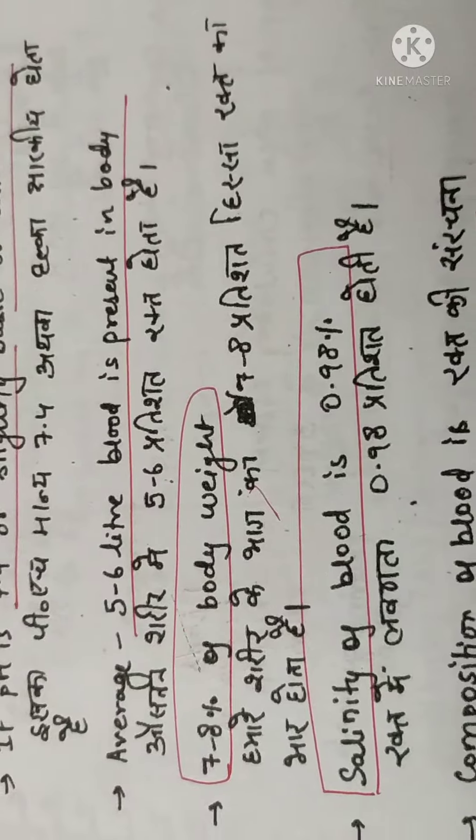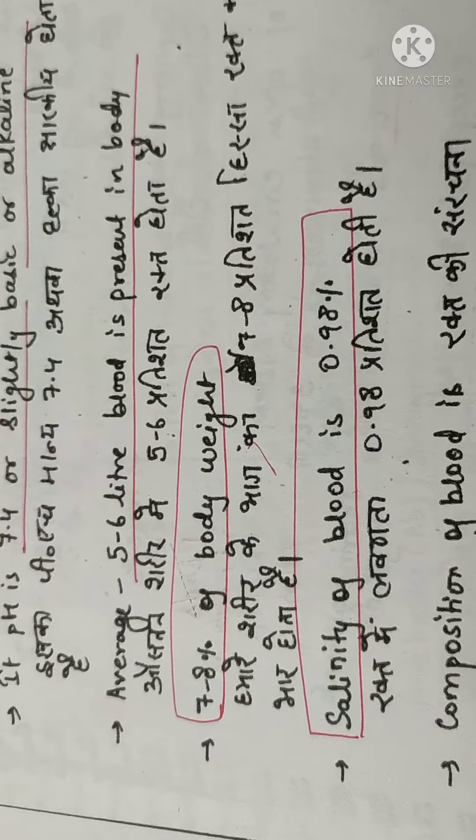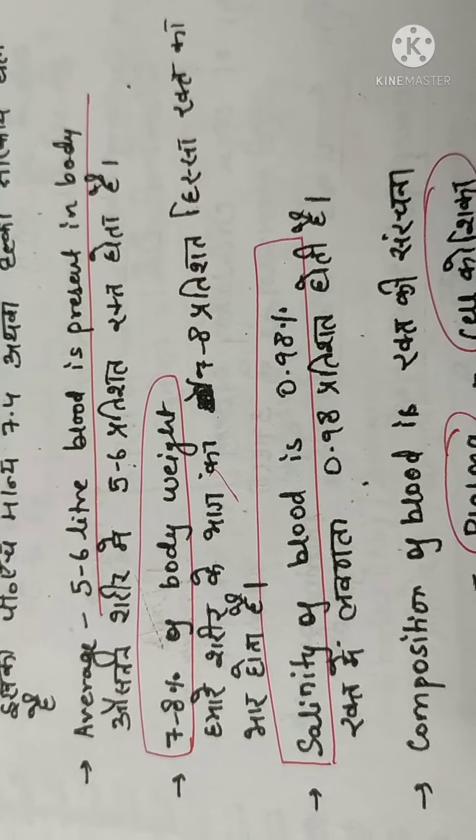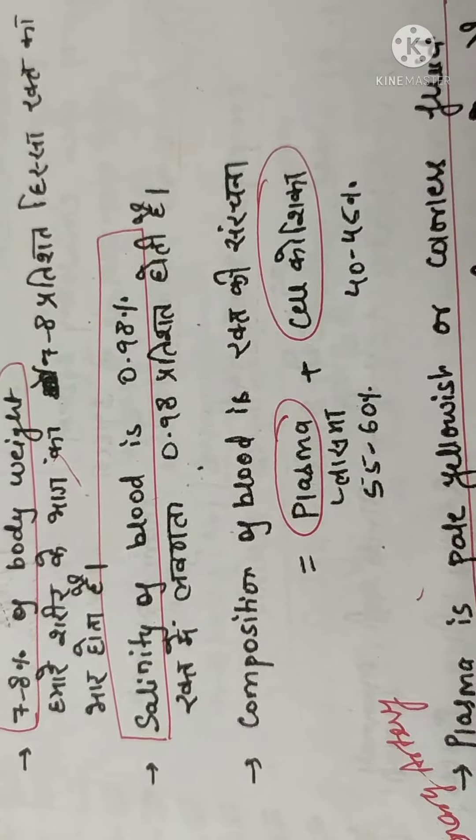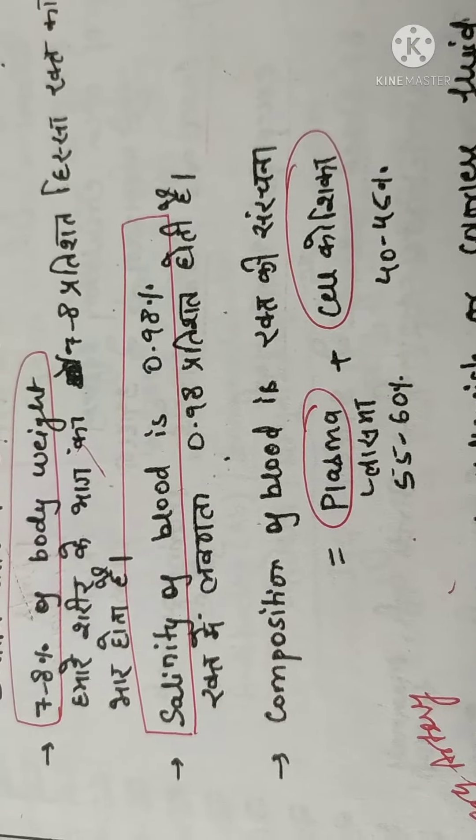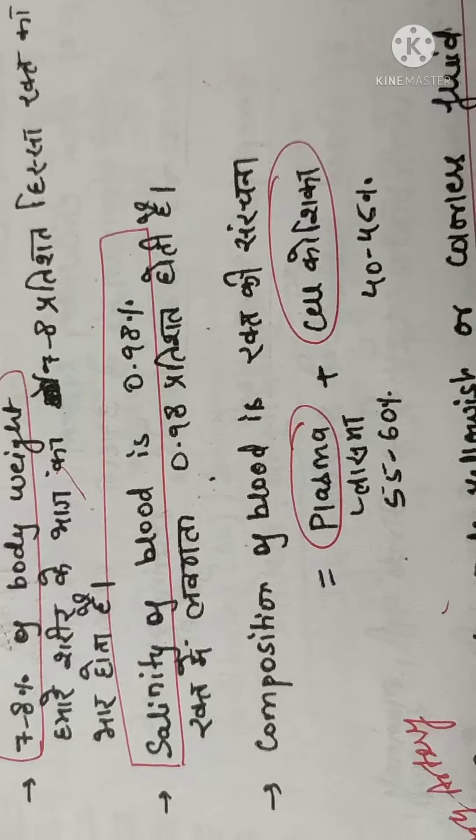The average body has 5 to 6 liters of blood, which is 7 to 8 percent of body weight. The salinity of the blood is 0.98, an approximate value. If you want to check it or refer to any book, you can go through the book also.